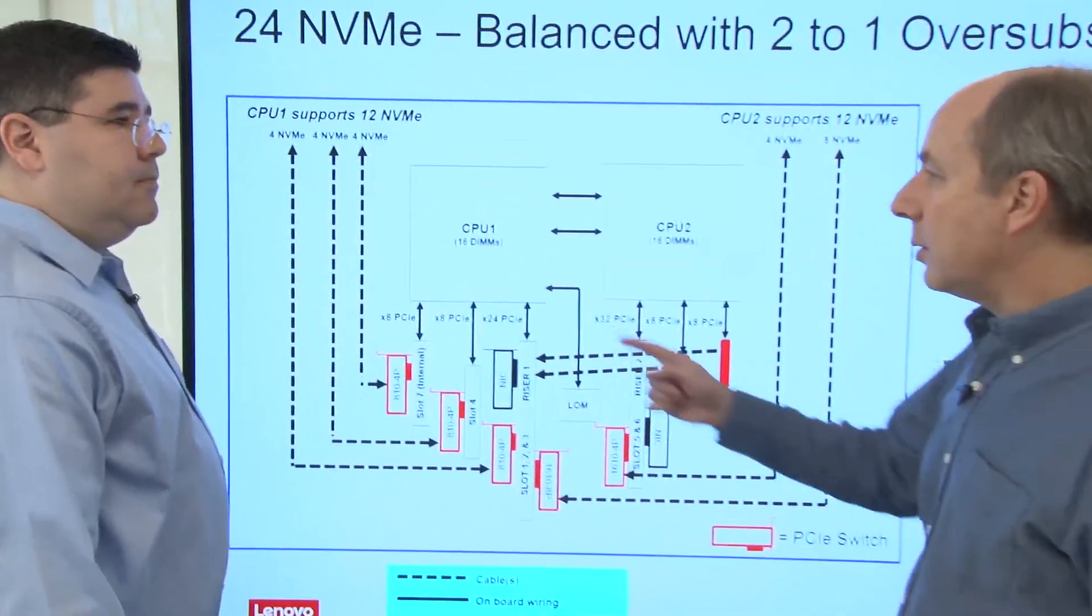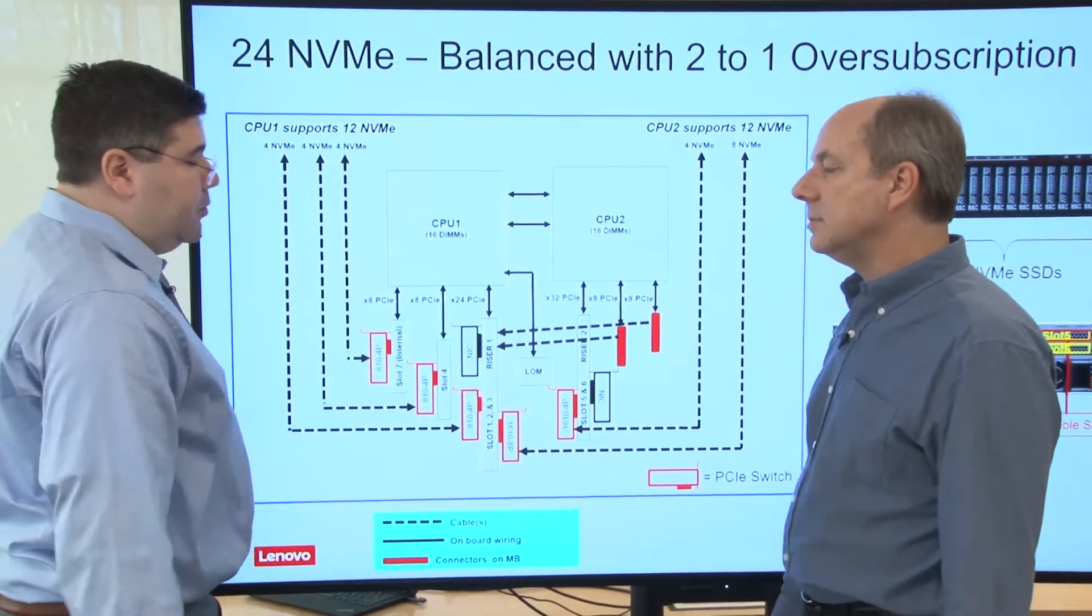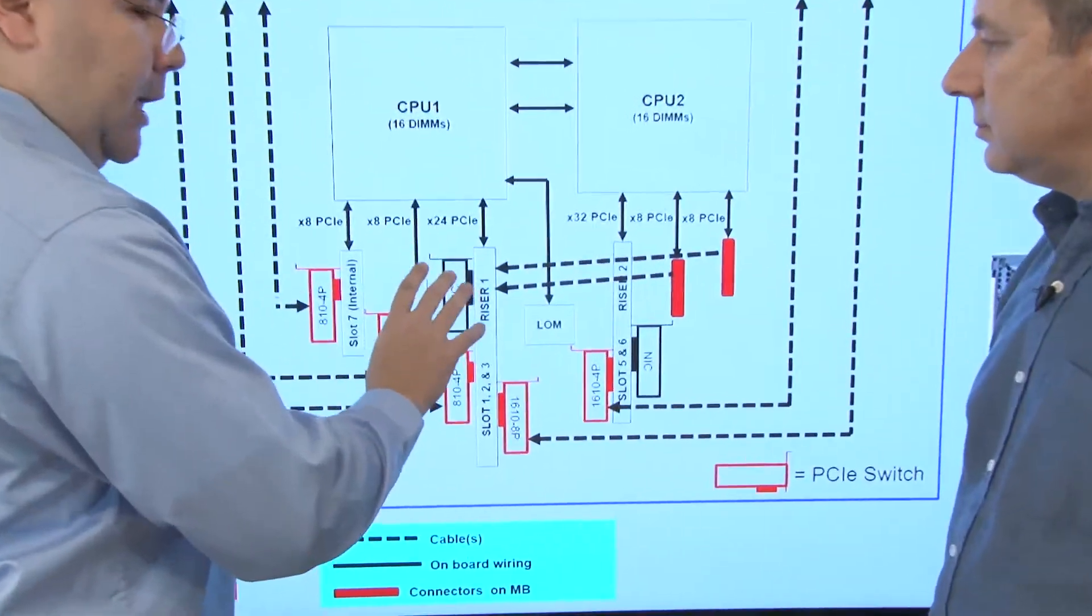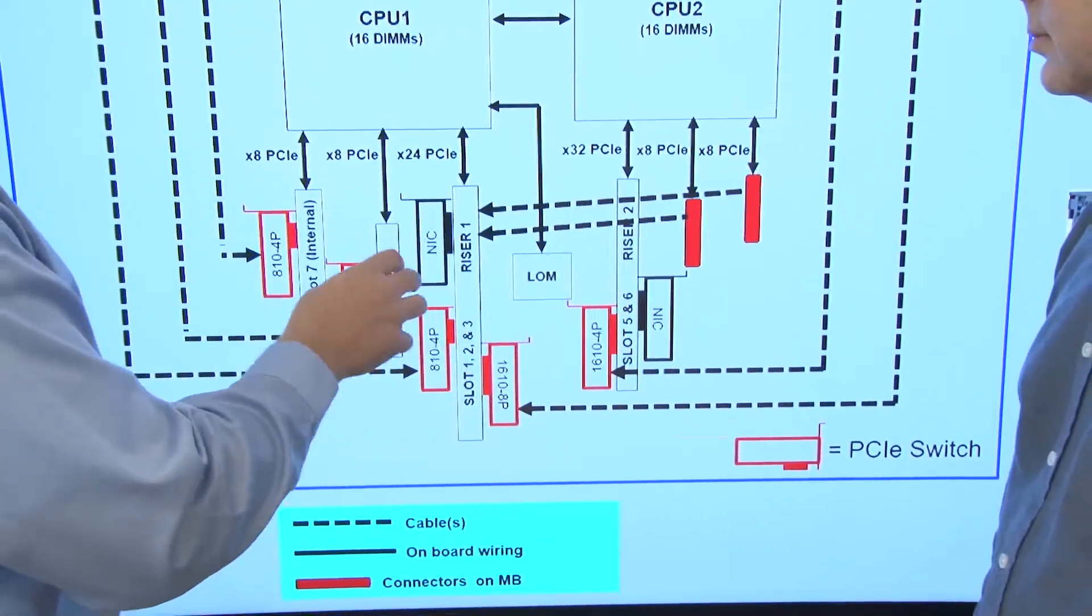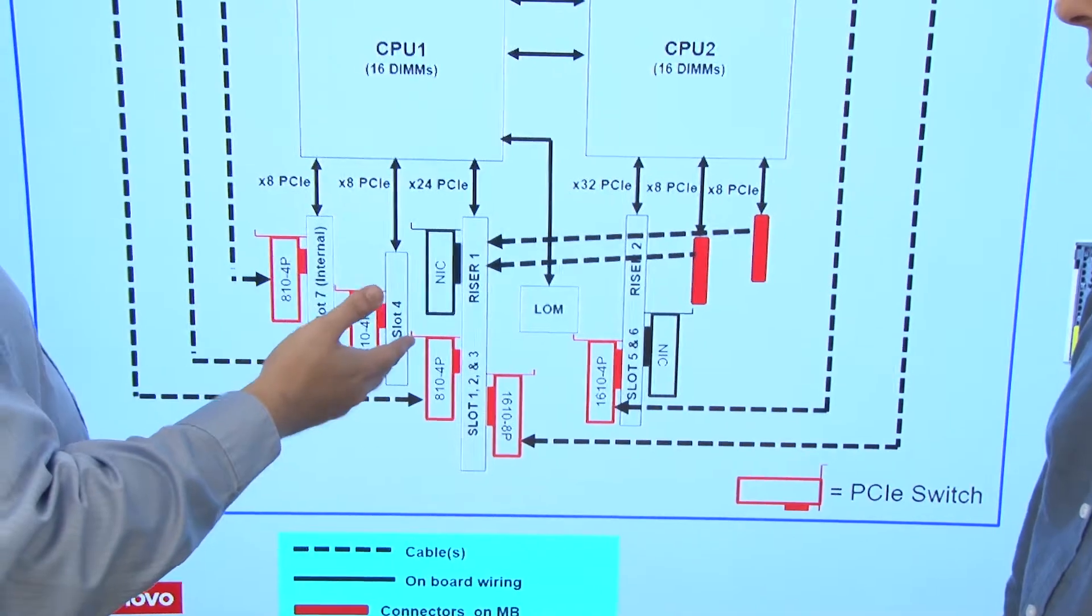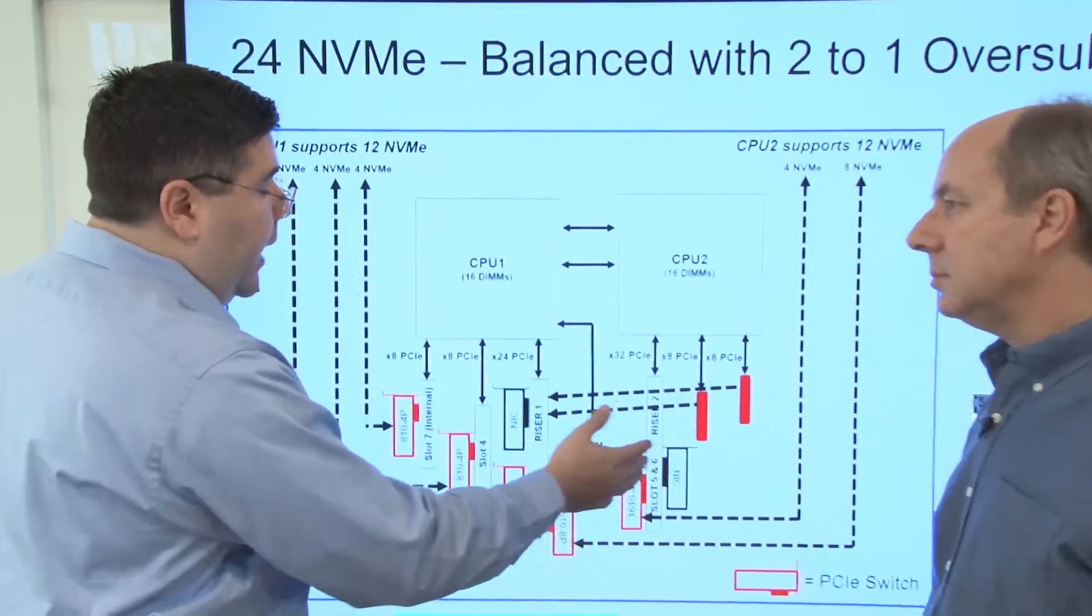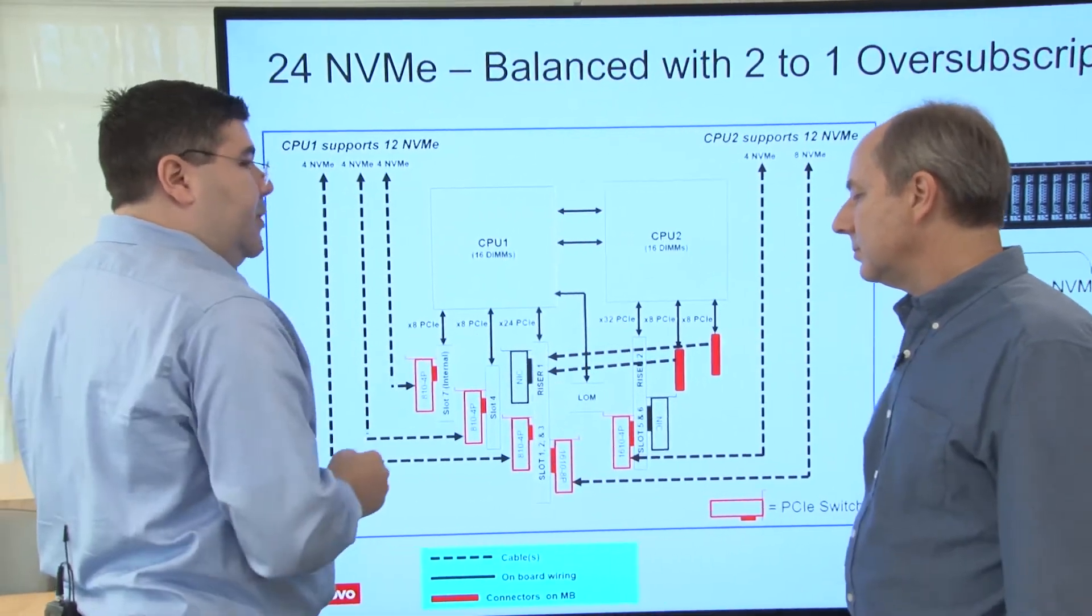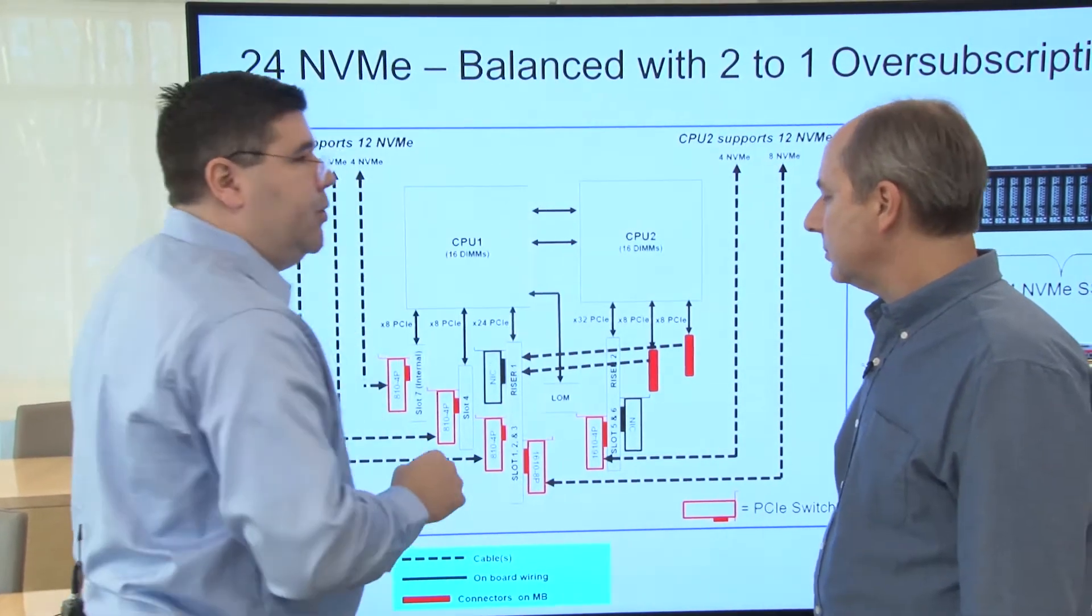Now, this one is also balanced in terms of the NIC cards, right? Yes. And that's another key attribute of this 24 drive configuration. We have two NIC interface card slots available in addition to the LOM, which is always available, integrated onto the motherboard. But each one of these network interface card slots are a by 16. So you can support your 10, 25, all the way up to 100 gig Ethernet in those slots, and they are also balanced. So you have one by 16 PCI slot connected to CPU one and another one connected to CPU two.